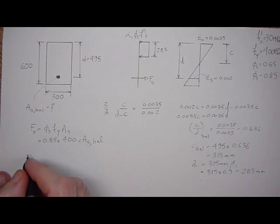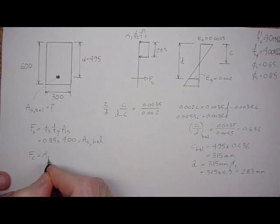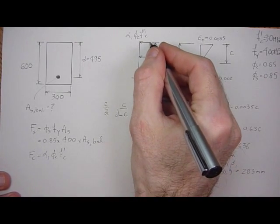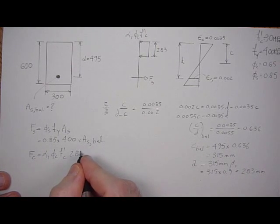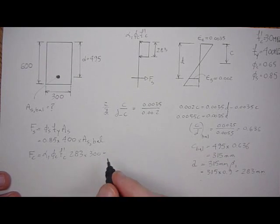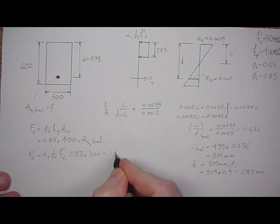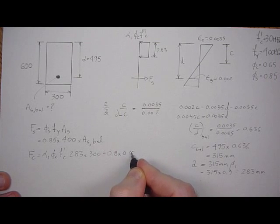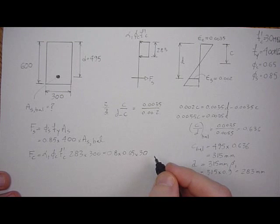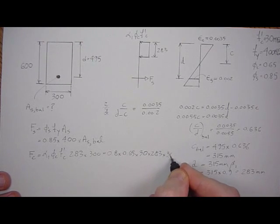But we also know the force in the concrete. And it's going to be alpha 1, phi C, F prime C times this, 283, times the width of the section, 300. Alpha 1 is always going to be 0.8. Phi of the concrete is always 0.65. For our problem, we're selecting 30 MPa concrete. And then 283 times 300.